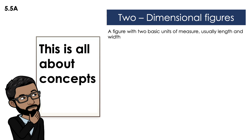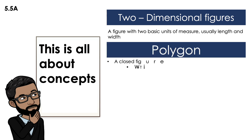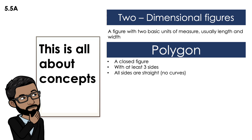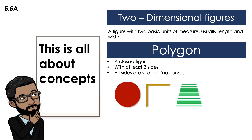Now let's talk about polygons. A polygon is a closed figure with at least three sides, and all sides are straight — no curves. Let's look at the shapes we have. The first shape: is it a closed figure? Yes. Does it have at least three sides? No, it's a circle, so that one cannot be a polygon. The second shape: is it a closed figure? No, because it has two open sides, so that one cannot be a polygon either.